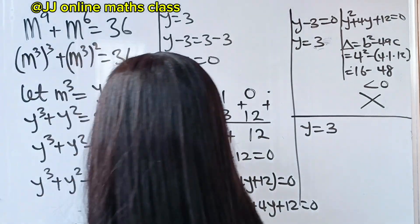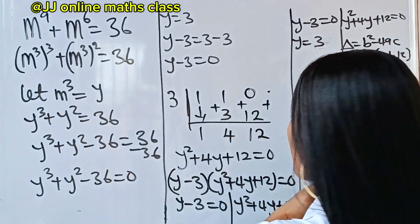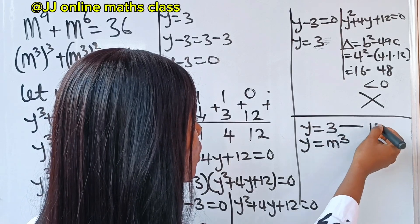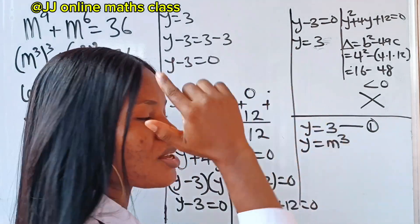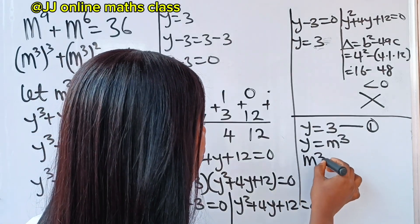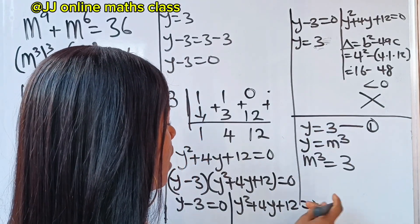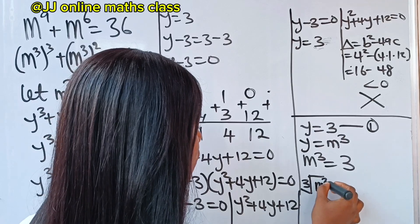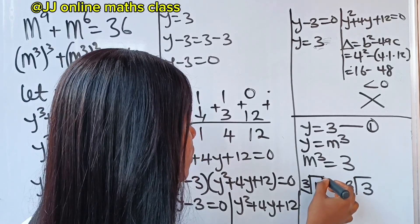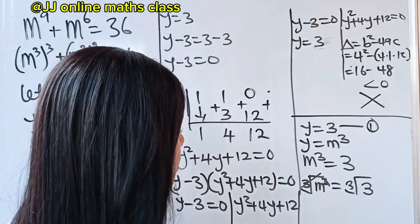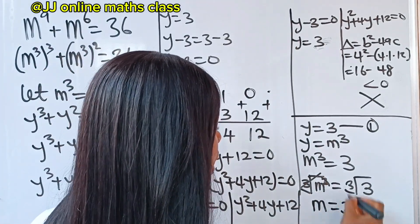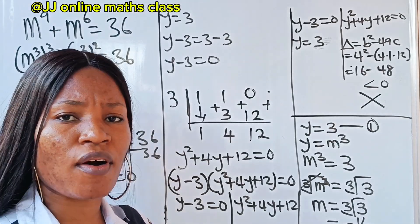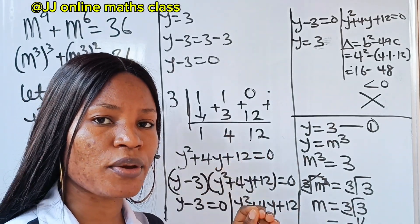Recall that y equals m to the power of 3. So m to the power of 3 equals 3. Taking the cube root of both sides, m equals the cube root of 3, which can be written as 3 to the power of one-third.